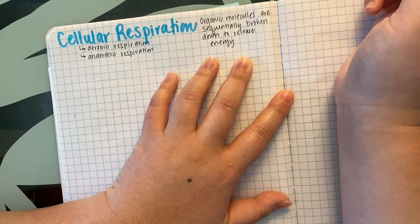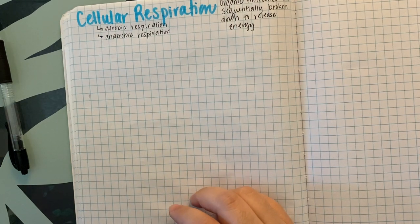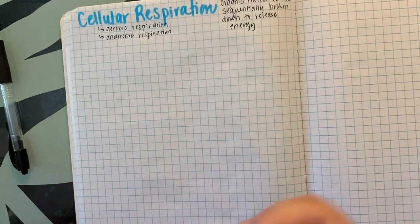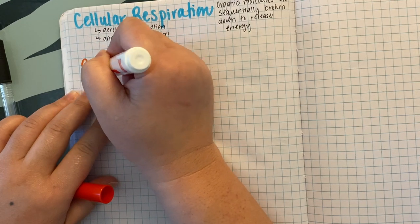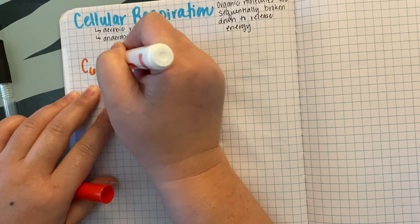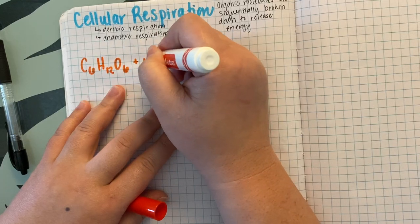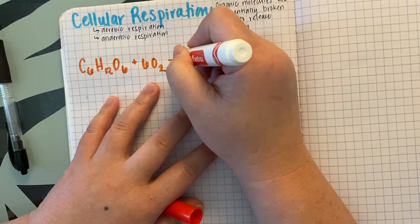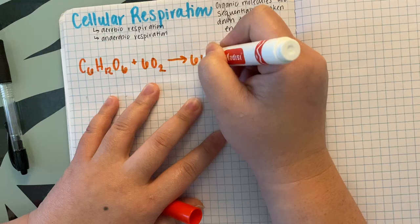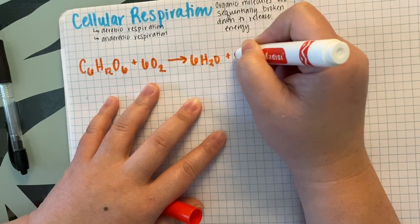The chemical equation for cellular respiration is essentially the reverse reaction of photosynthesis. We start with a molecule of glucose in the presence of oxygen — aerobic respiration — which will yield water and carbon dioxide.